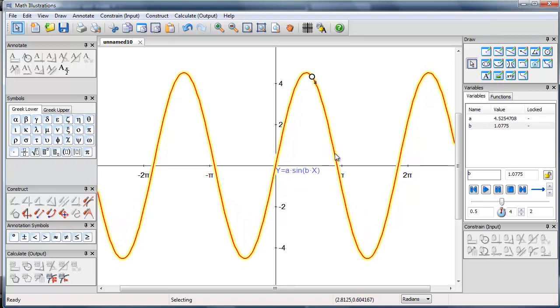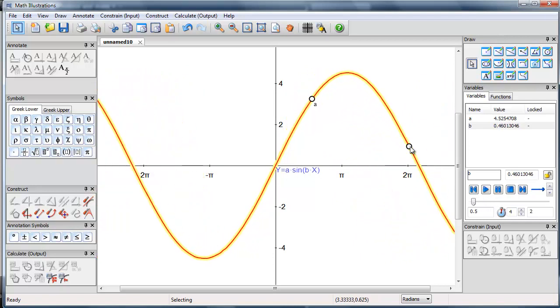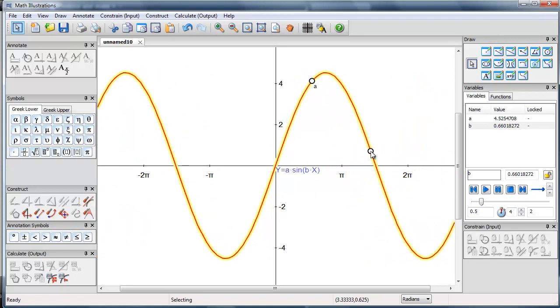If I grab it here and drag, I see I get a drag handle attached to the variable b. So if I grab that, I can drag the period.